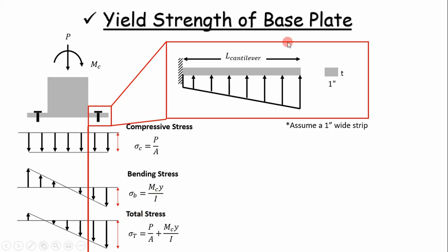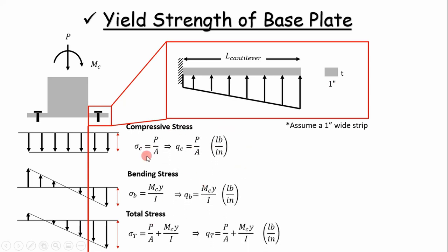Another simplification: treat this cantilever beam as a one-inch-wide strip. You can then easily show that you can convert your stresses to line loads. If you convert them to line loads, you have beam tables you can take advantage of to calculate equivalent forces and simplify your analysis tremendously. Your bending stress can become a line load, and you just sum those to get the total line load.